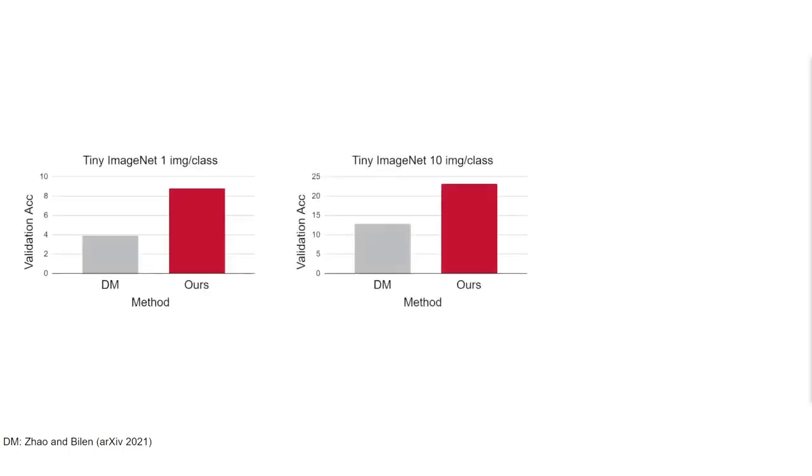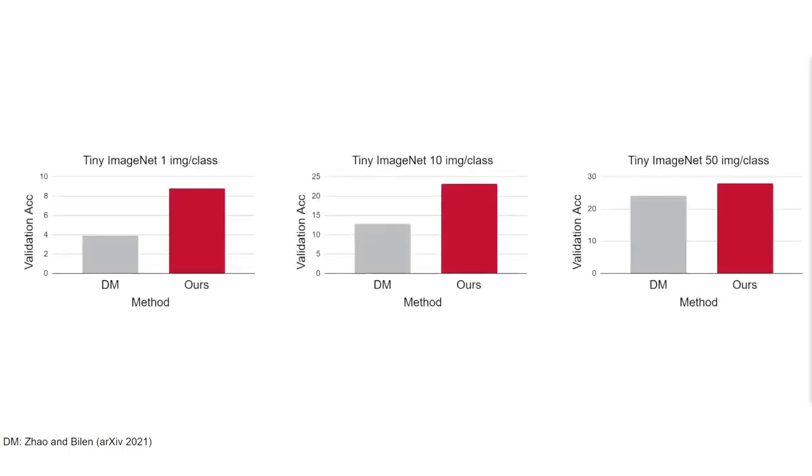Due to the dataset's high complexity, only one other method is capable of distilling Tiny ImageNet. Despite this, we again outperform this method on 1, 10, and 50 images per class.